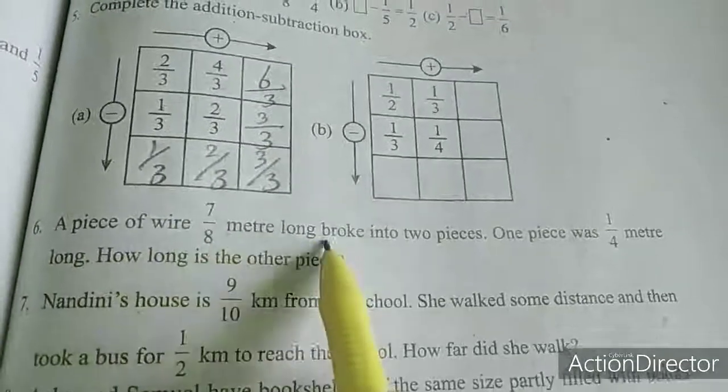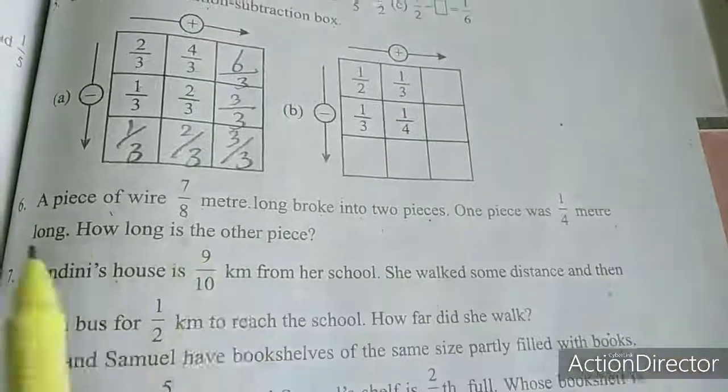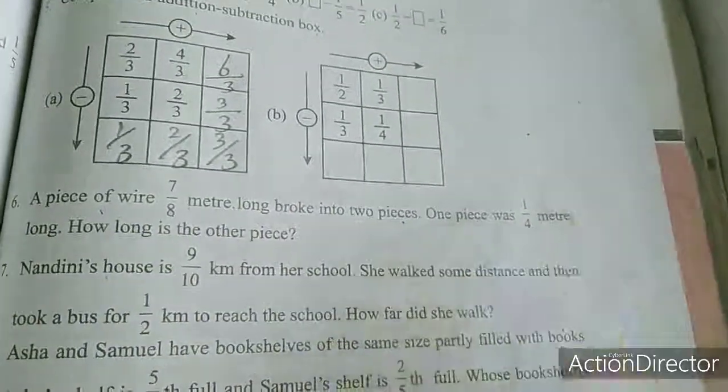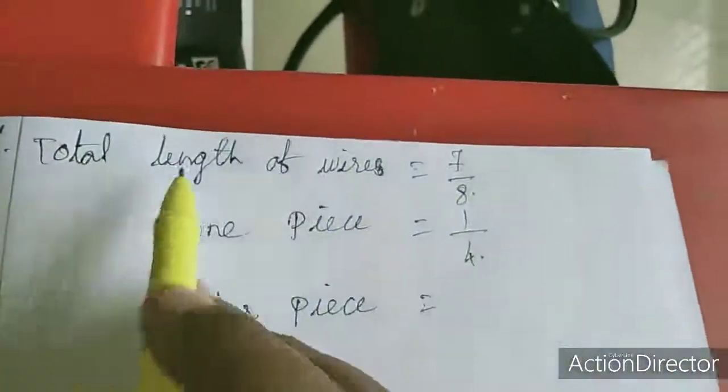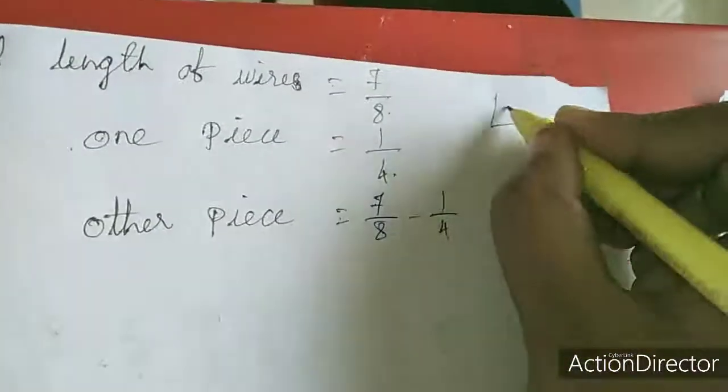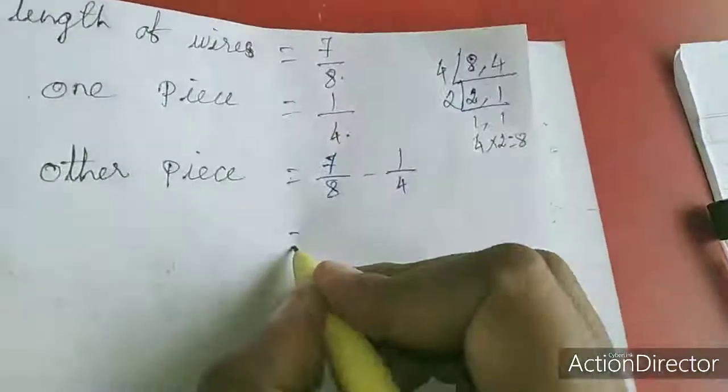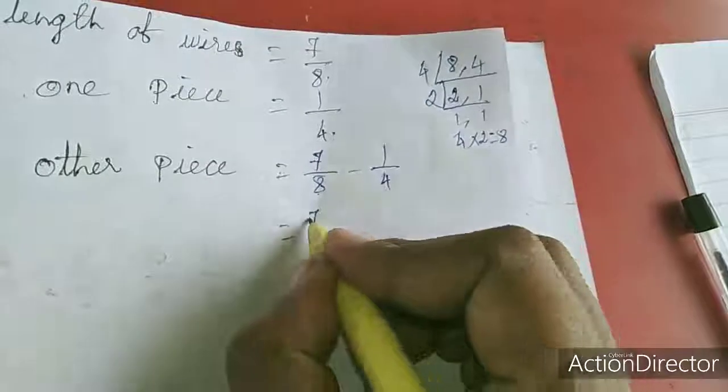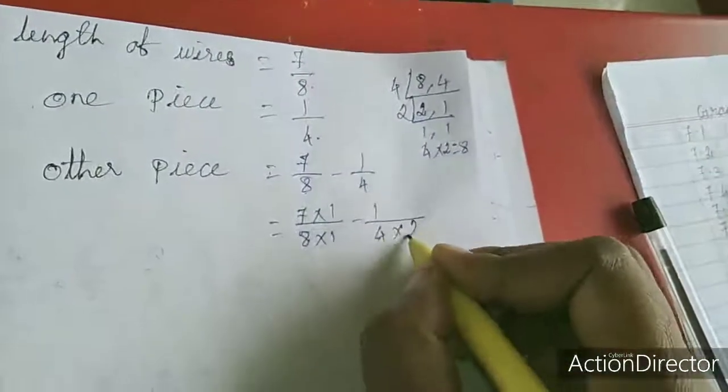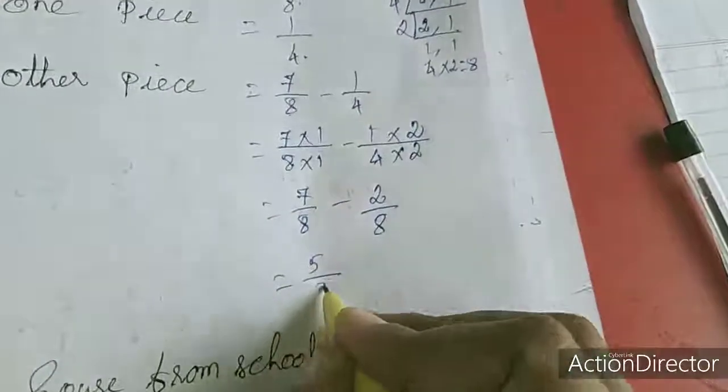Now we will move to the 6th sum. A piece of wire 7 by 8 meter long broke into 2 pieces. One piece was 1 by 4 meter long. How long is the other piece? So total length minus one piece. Total length of wire is 7 by 8. One piece is 1 by 4. We need the other piece, so total minus 1 piece. I am going to find out the LCM. 2, 1. LCM is 8. Denomination we need 8, so multiply by 1. Here 2. So 7 by 8 minus 2 by 8. If we subtract, we will get 5 by 8. So other piece will be 5 by 8.